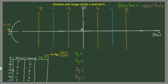We know that tangent is sine over cosine, so we need to divide the value of sine by the value of cosine. If sine equals zero divided by one, that gives us zero. One divided by zero gives us positive infinity. Zero divided by minus one gives us zero again. Minus one divided by zero gives us negative infinity. Zero over one is zero again, and we get negative infinity and zero over minus one gives zero.